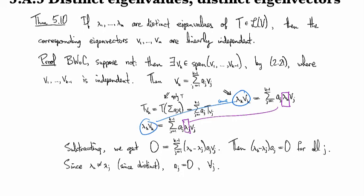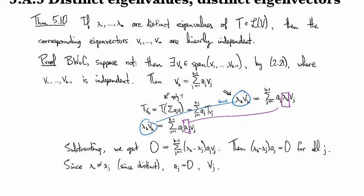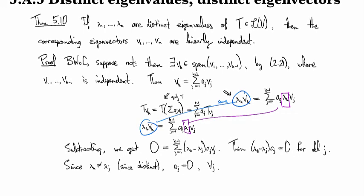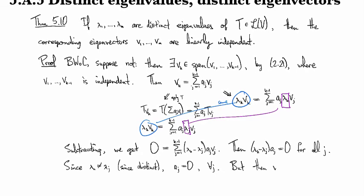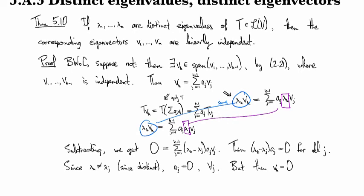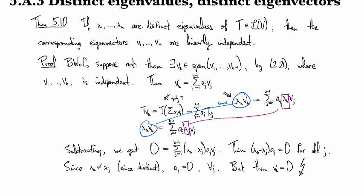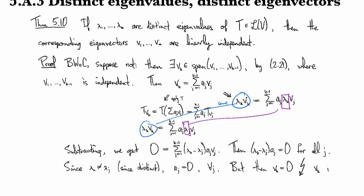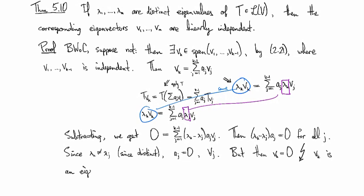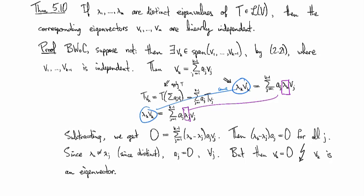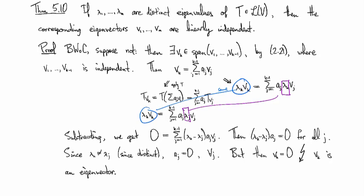But then what does that tell us about v_k? Then v_k has to be the zero vector. But that's not allowed because v_k is an eigenvector. So that's our contradiction right there, and we are done.